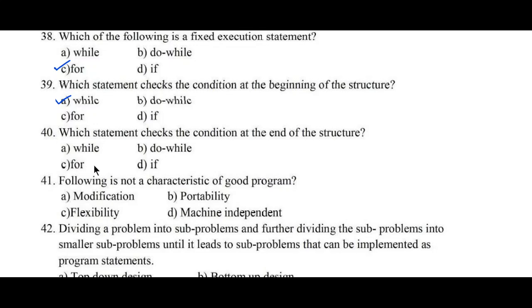Question number 40: Which statement checks the condition at the end of the structure? Option A. While, B. Do-while, C. For, D. If. So here option B, Do-while, is the right answer. Question number 41: Which of the following is not a characteristic of a good program? Option A. Modification, B. Portability, C. Flexibility, D. Machine independent. So here option D, Machine independent, is the right answer.